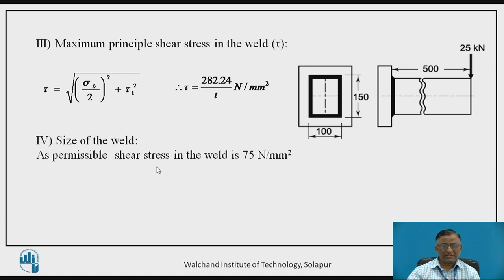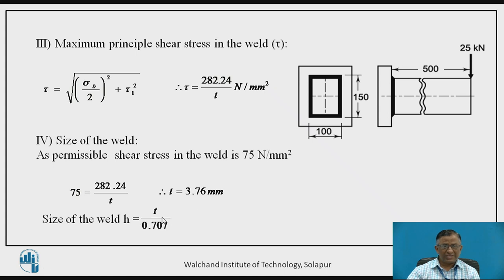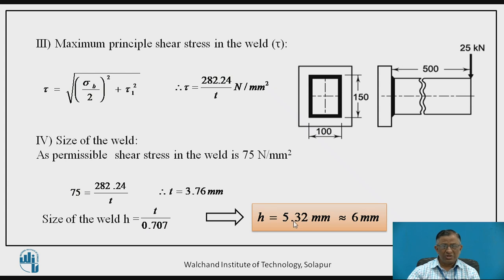Based upon this, we decide the weld size by equating tau to the permissible value of 75 N/mm². Using this equation, we calculate the throat size T, and then the weld size is H = T / 0.707. This results in a weld size of 5.32 mm, or say 6 mm. This is the way we design the cantilever beam with a box weld section subjected to bending moment.